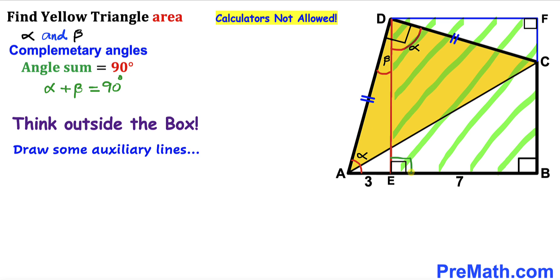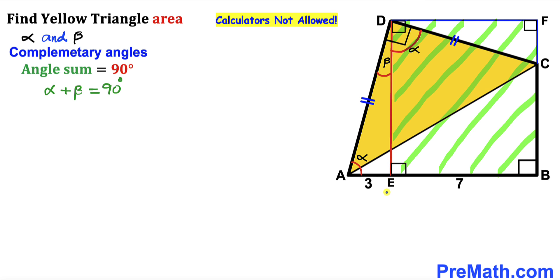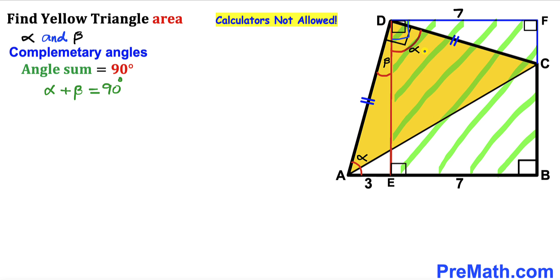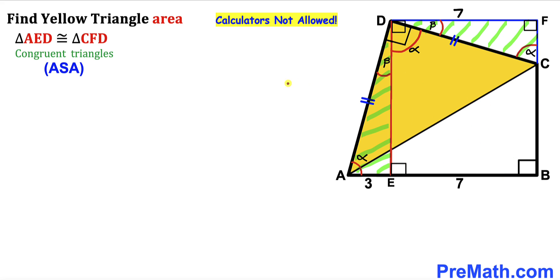We know each angle of rectangle EBFD is 90 degrees, so all four angles are 90 degrees. In this rectangle, side EB equals side DF. Since EB is 7 units, DF is 7 units as well. We can see that this angle is 90 degrees and this angle is alpha, so the remaining angle is beta. In right triangle CFD, this angle is beta, this angle is 90 degrees, so this angle is alpha.